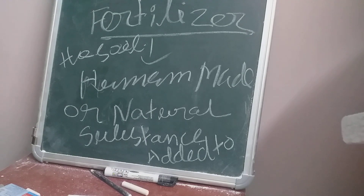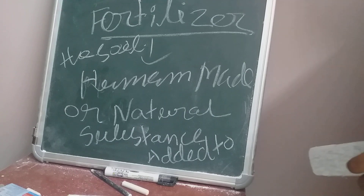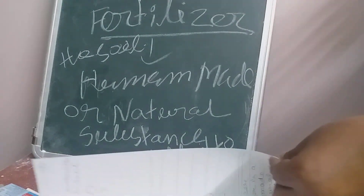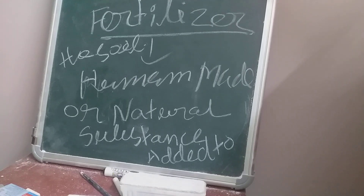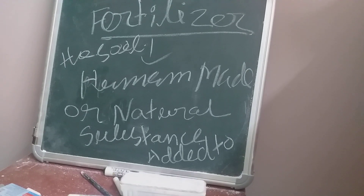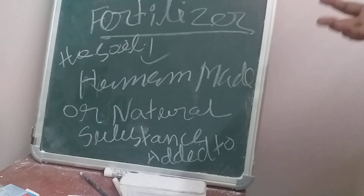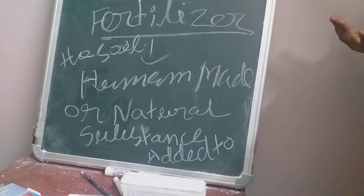Manure is a natural material obtained from plants and animals. Fertilizer can be human-made or natural. Manure does not provide humus to the soil directly, while fertilizer does. Manure is absorbed slowly and is economical, whereas fertilizer is absorbed quickly by the plant but is comparatively costly.